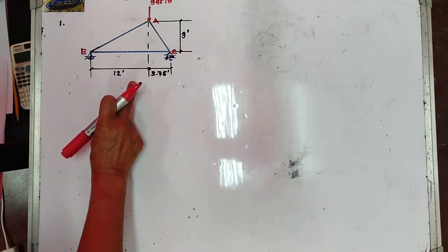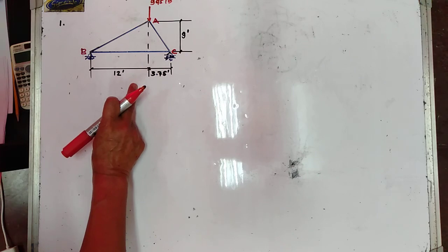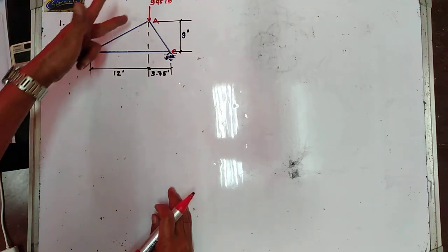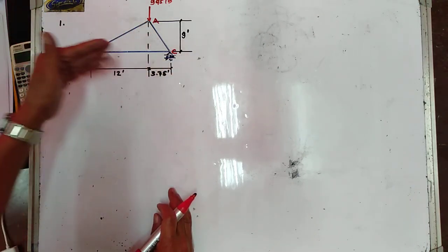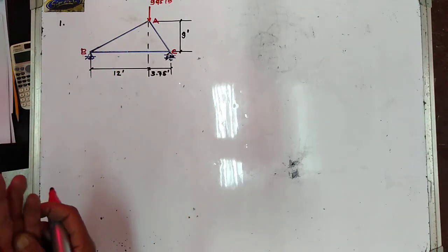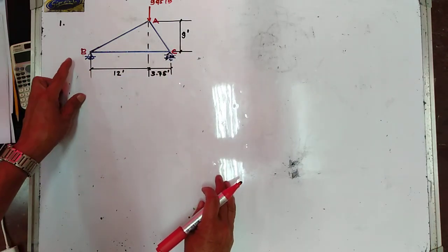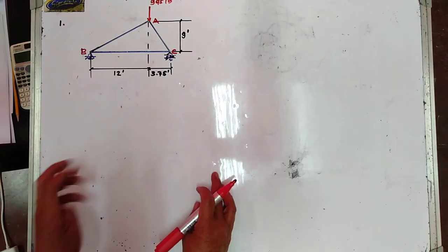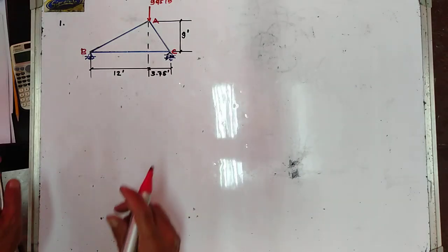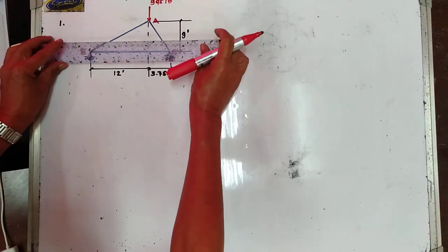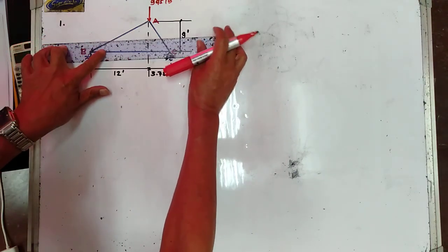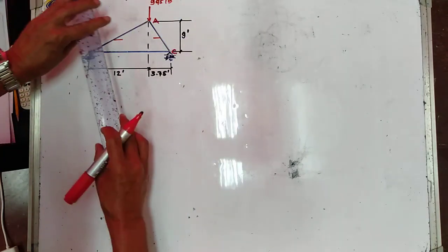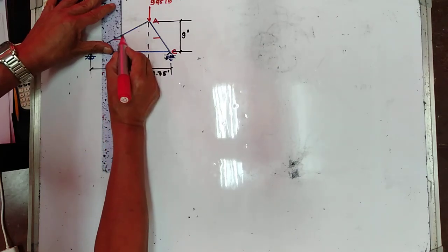Using the method of joints, determine the force in each member of the truss shown — member AB, member AC, and member BC. This truss is supported by a hinge at point B and by a roller at point C. Let us determine the slope of member AB and member AC.